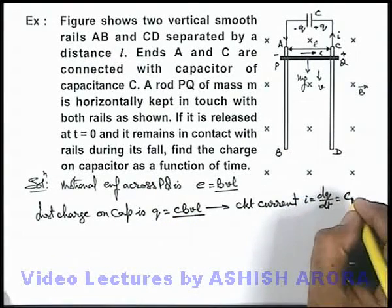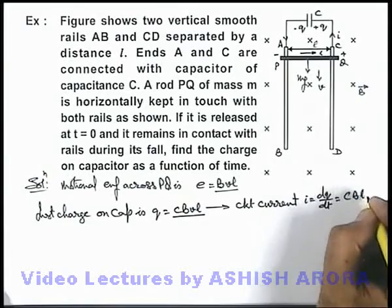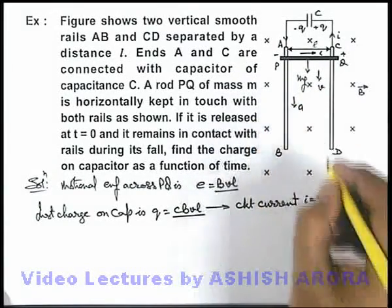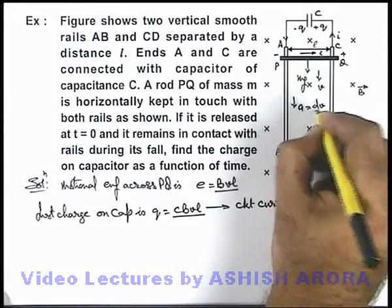So dq by dt will be CBl multiplied by dv by dt, which we can write as CBl times a, where a can be written as the acceleration of this rod, which is dv by dt.